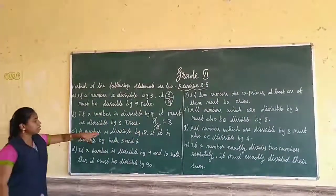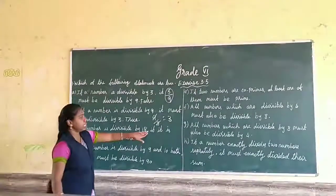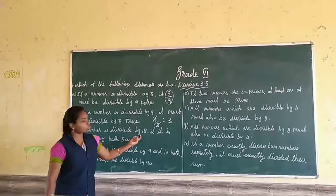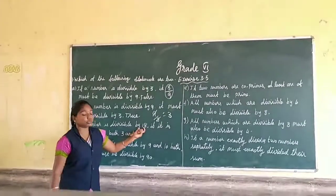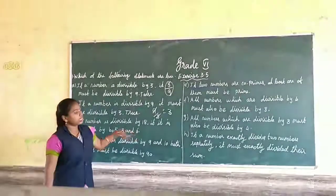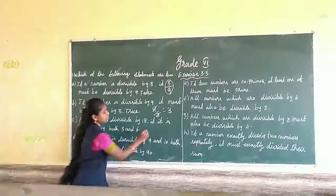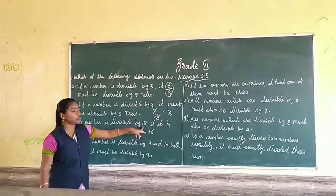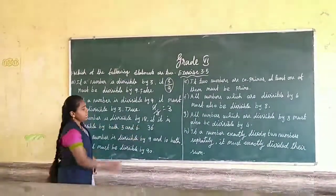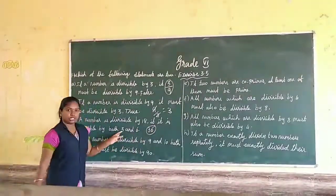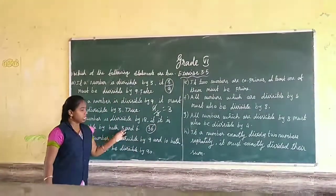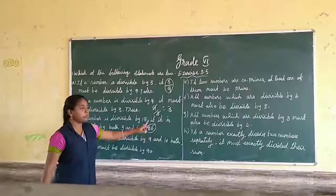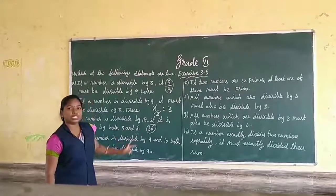Next statement: if a number is divisible by 18, it must be divisible by both 3 and 6. For that, I will take the number 36. 36 is divisible by 18, and it is also divisible by 3 and by 6. So this statement is true.